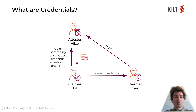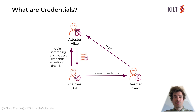Let us start with a quick look at our basic credential model consisting of three actors: a claimer Bob, an attester Alice, and a verifier Carol. Bob wants to prove his possession of a specific credential to a verifier Carol, but she cannot check this directly and does not trust Bob without the approval of a third party she trusts. Therefore, Bob shows his credential to Alice, and if everything checks out, she signs it and sends back the attestation to Bob, which he can present to Carol.